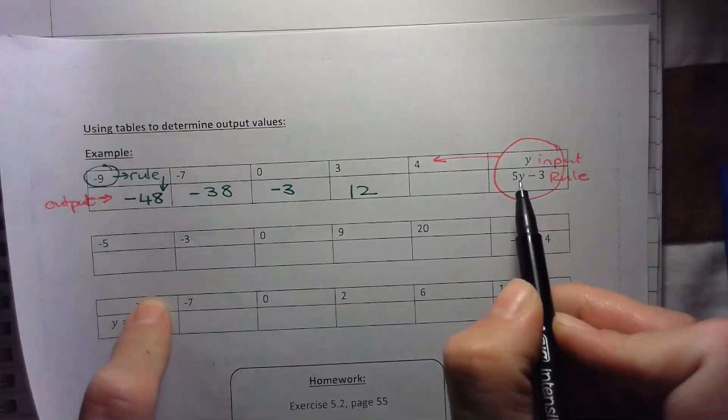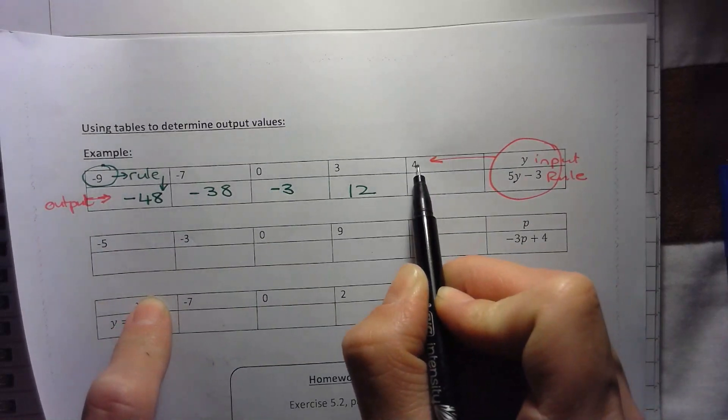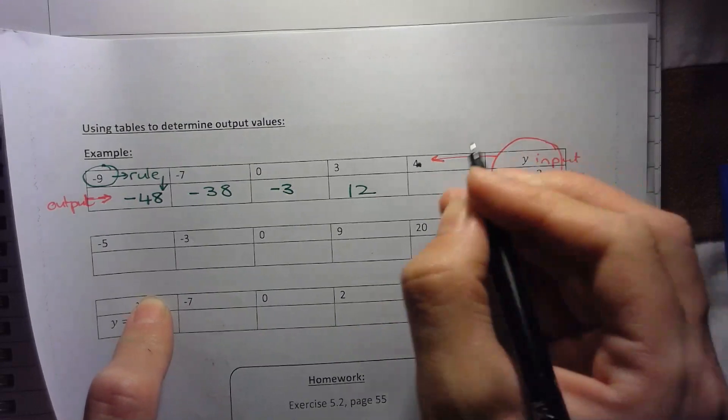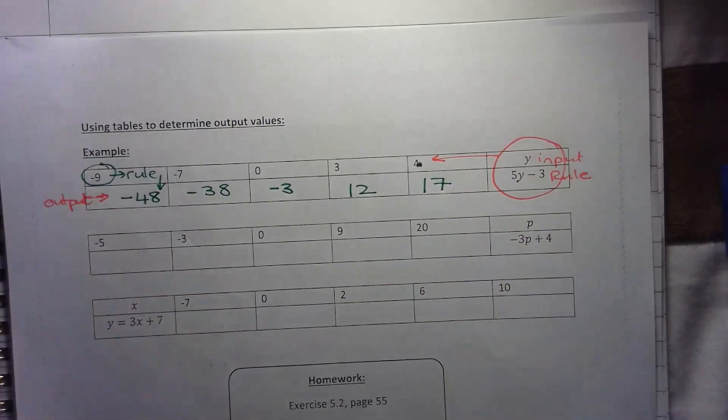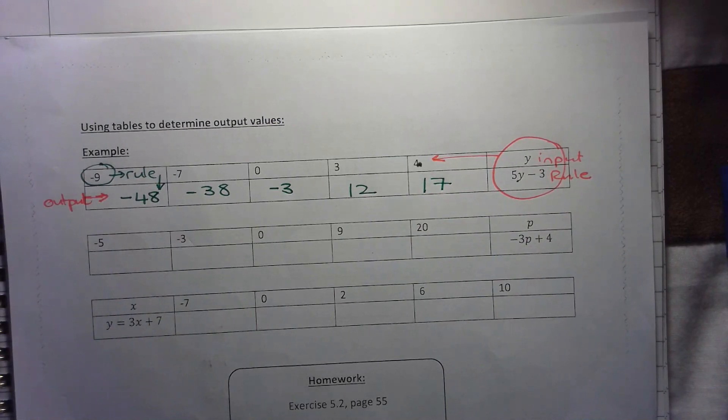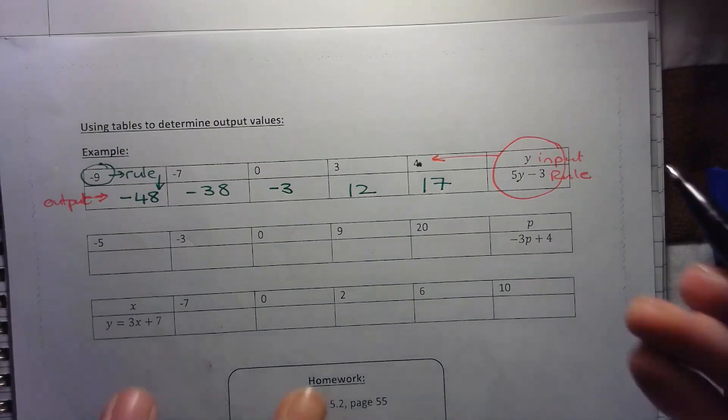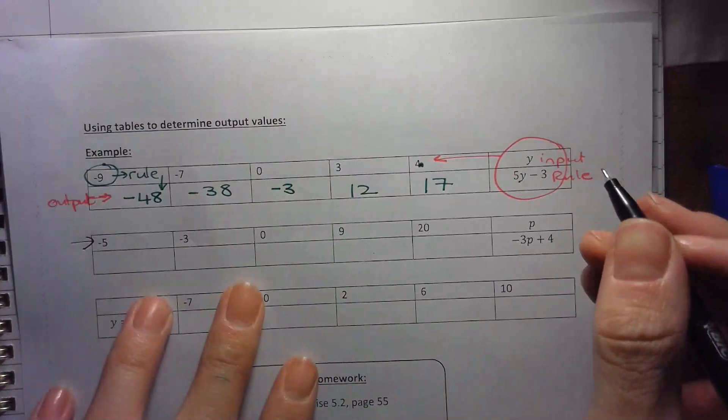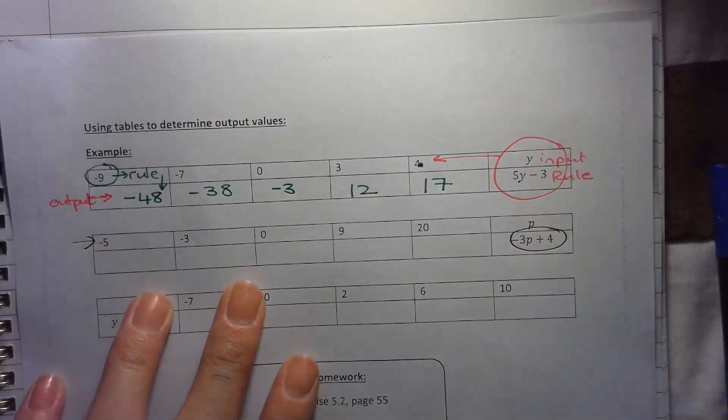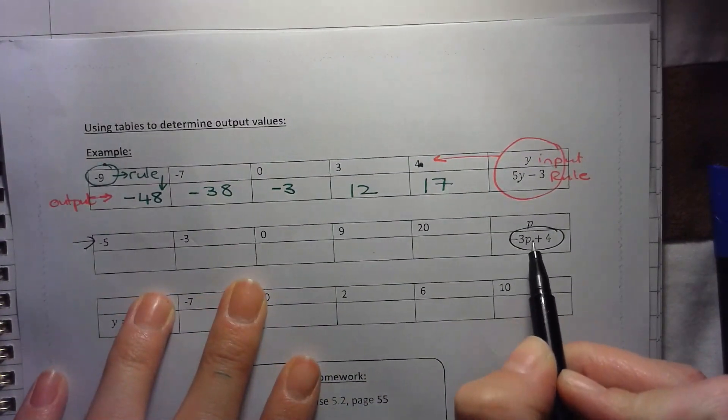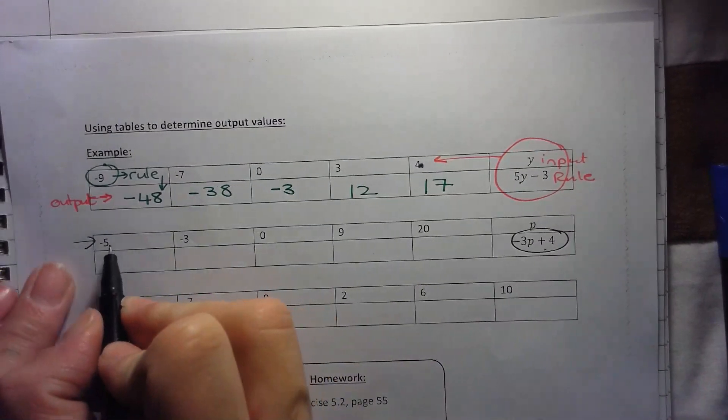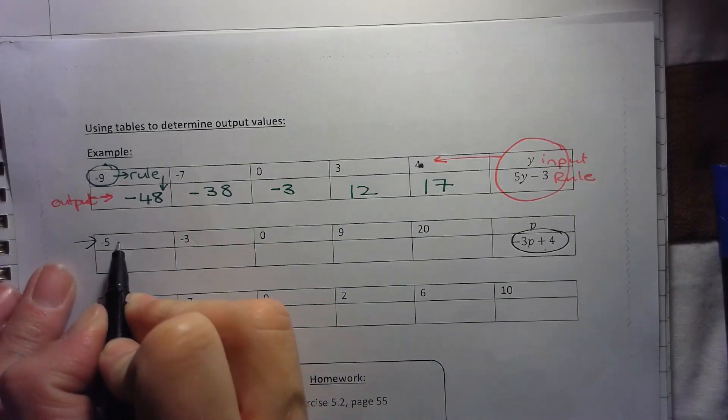Then we have 5 times 3 in your table minus 3. 5 times 3 is 15 minus 3 is going to get me to 12. You don't have to show the working out. You can do it in your head. So we're working with now 5 times 4. Let's do this one in our head. 5 times 4 is 20 minus 3 is 17. Then for this next one, there is my input is the first row. There is my rule. So when I use a random letter, that is the rule that goes with it. The general one.